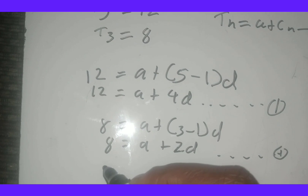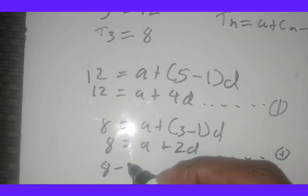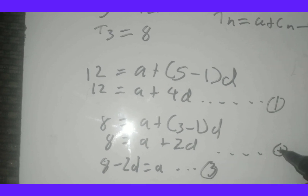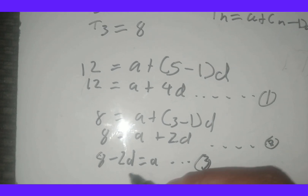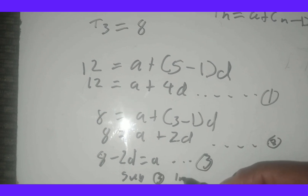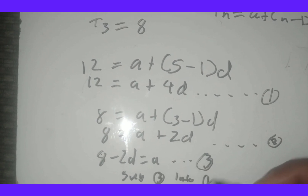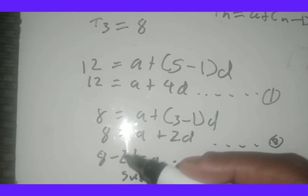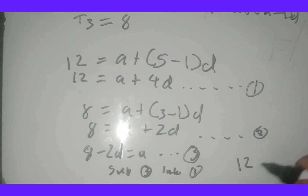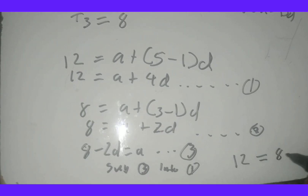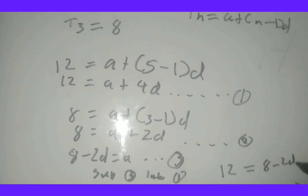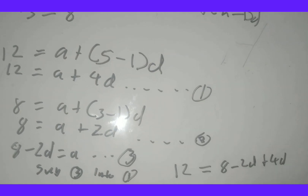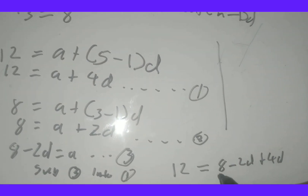Taking the 2d to the other side gives us: 8 minus 2d equals a. That's equation 3. Now I substitute equation 3 into equation 1 — wherever I see a, I replace it with 8 minus 2d. So in equation 1 it becomes: 12 equals 8 minus 2d plus 4d.